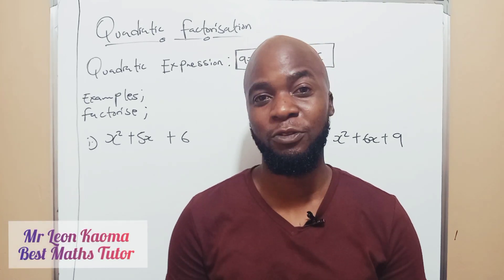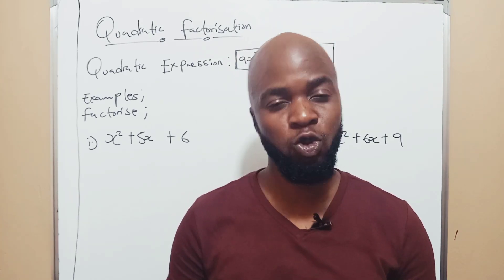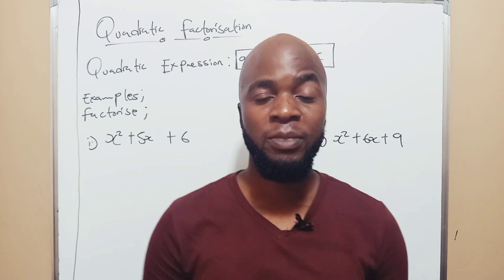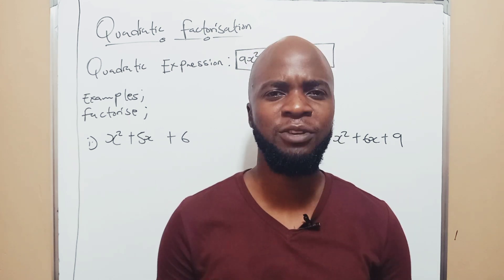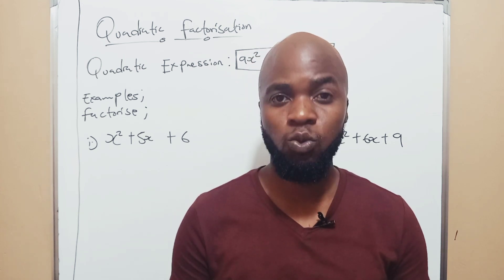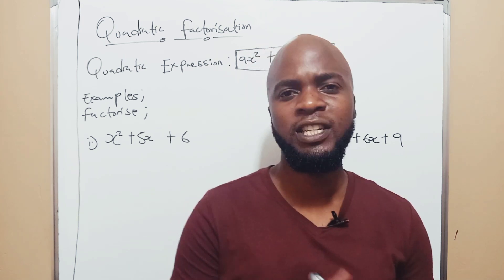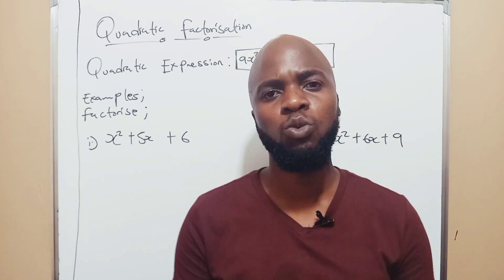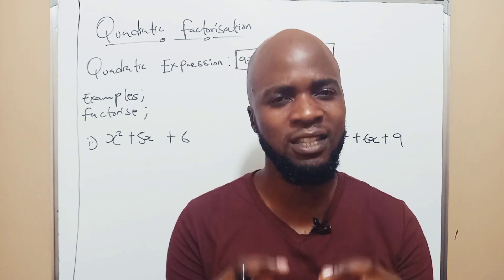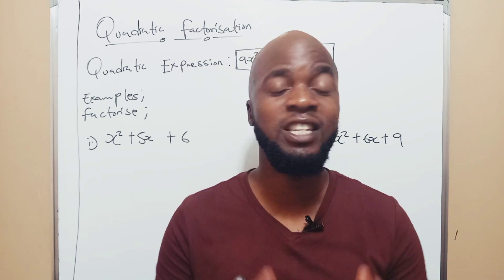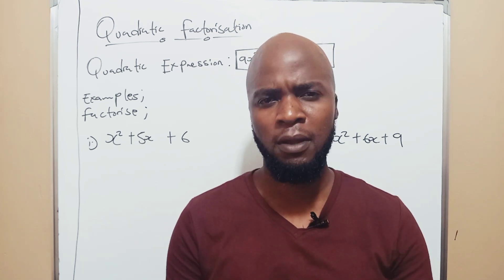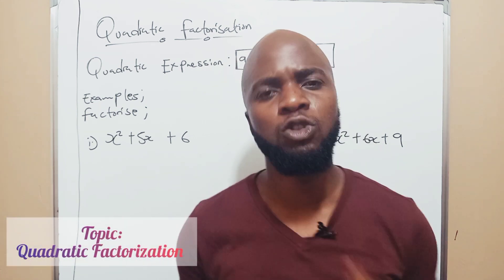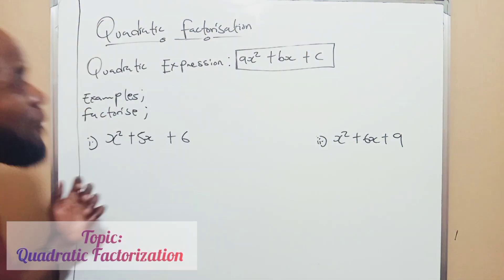Hey there, welcome to the fourth week. We've been looking at huge topics like probability, sets, paper 1 and paper 2. Now in this fourth week, we have to end on a high note. This topic is going to lead us into the axis of symmetry, which we're going to look at in the first week of March. Make sure you get this — the axis of symmetry is the new syllabus topic. Let's look at quadratic factorization. Come with me.